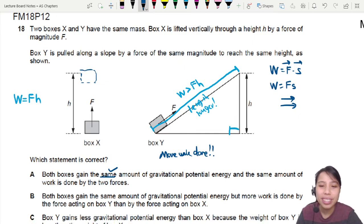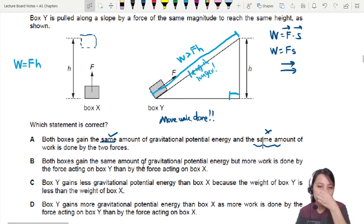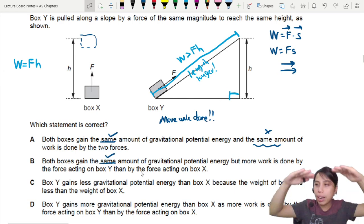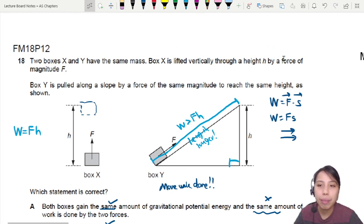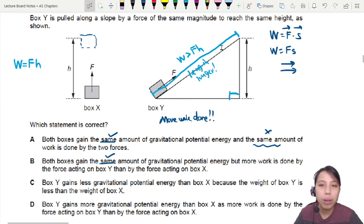So this one is same? No, no, cannot be the same. Then we have other choices. B says both boxes gain the same GPE. Same, yes. You go up to the same height. But more work done by the force acting on box Y compared to X. Yes. So this poor force F, it has to work a little bit more because you have a longer displacement. I mean, we're assuming F is the same, right? Same magnitude F. Yeah. So you have to pull a longer displacement, so more work done. So yes, this is correct.